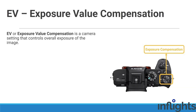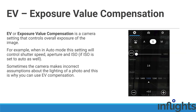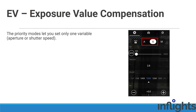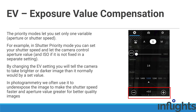EV or exposure value compensation is the camera setting that controls the overall exposure of images. In auto mode, this setting controls shutter speed, aperture, and ISO if ISO is set to auto. The camera sometimes makes incorrect assumptions about the amount of light in the photo. EV compensation does not work in full manual mode. Priority modes let you set a fixed value for only one variable — aperture or shutter speed. In shutter priority mode, you can set the shutter speed and let the camera control aperture and ISO. By changing the EV setting, you tell the camera to take brighter or darker images by a set value. In photogrammetry, we often use it to underexpose the image, making the shutter speed faster and aperture value greater for better quality images.